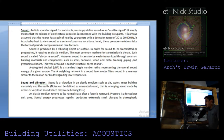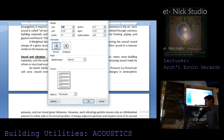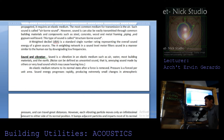An A-weighted decibel is a standard single-number rating representing the overall sound energy of a given source. The A-weighted network in the sound level meter filters sound in a manner similar to the human ear by downgrading low frequencies. Sound is a vibration in an elastic medium such as air, water, most building materials, and earth.